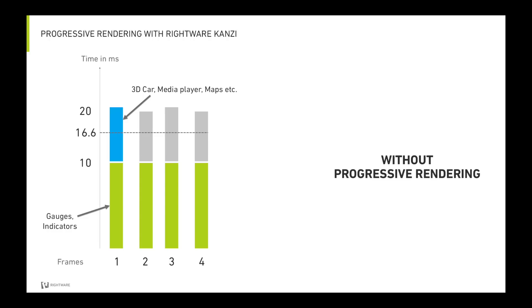Here's how it works. Let's say you've measured the performance of your hardware. The green bar represents your mission-critical content — gauges, indicators, and so on. The blue bar is your 3D car, your media player, and so on. See how the combined render time goes over that magical line of 16.6 milliseconds? This means that your hardware doesn't have enough power to render this particular user interface design at 60 frames per second.